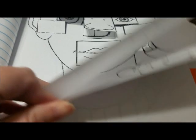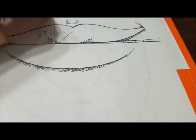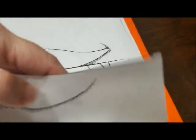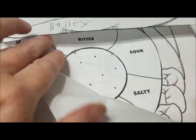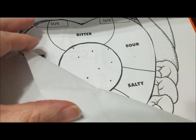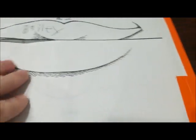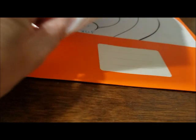And then we also did the mouth where you can open the mouth and see the parts of the tongue. The bitter, the sour, the salty, the sweet, all of that. And again, that's an underneath page.